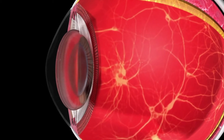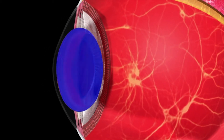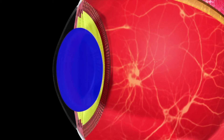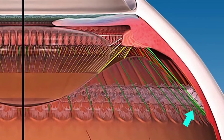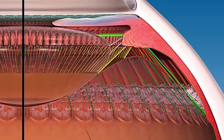The zonules are a series of fine fibers that connect the crystalline lens to the ciliary body. The function of the zonules is to hold the lens in place. The zonular fibers arise from the pars plana and from the zonular plexus in the valleys of the ciliary processes and proceed to form the zonular fork, which forms the zonular limbs — anterior, equatorial, and posterior — finally inserting into the lens capsule.